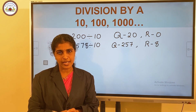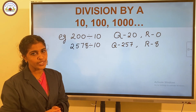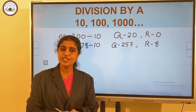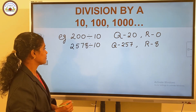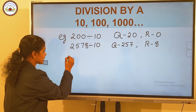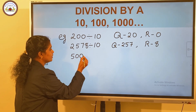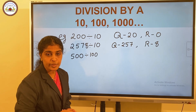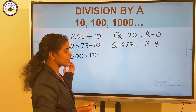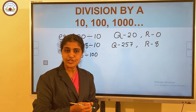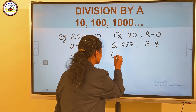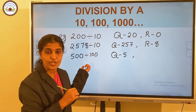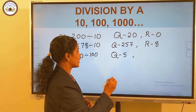If we divide a number by 100, we get the quotient by removing the ones and the tens digit. And the number formed by the last two digits is the remainder. Consider the example: 500 divided by 100. We get the quotient by removing the ones and tens places. Here, those digits are both 0, so the quotient is 5 and the remainder is 0.